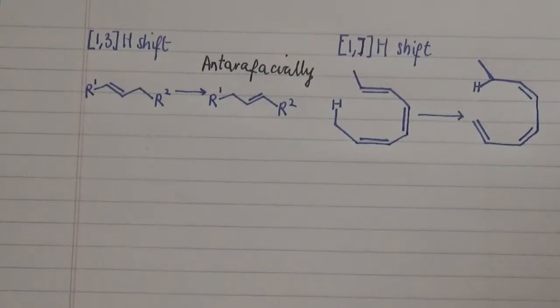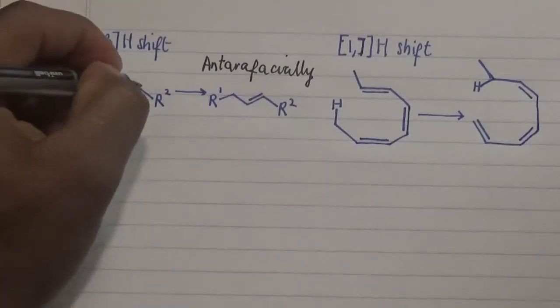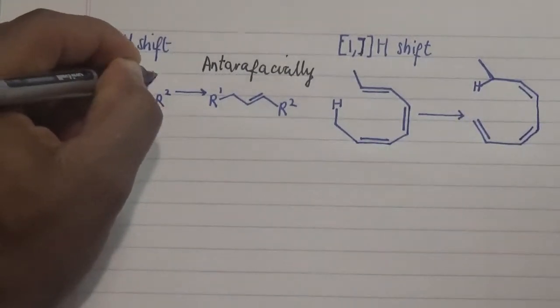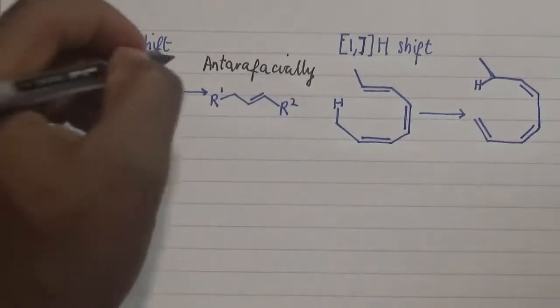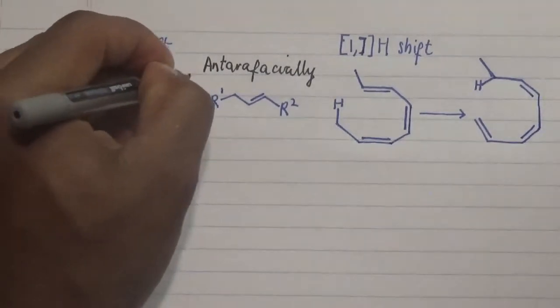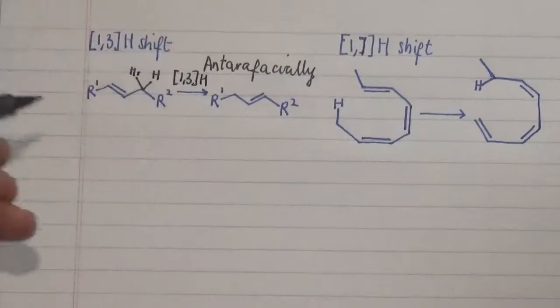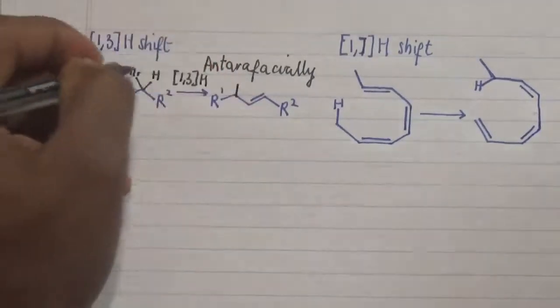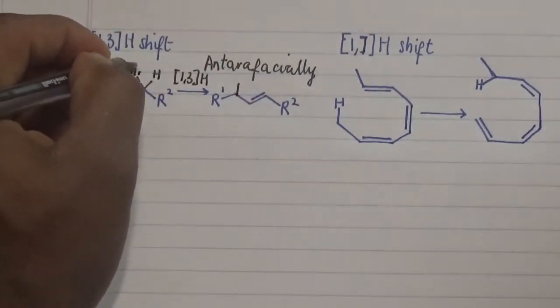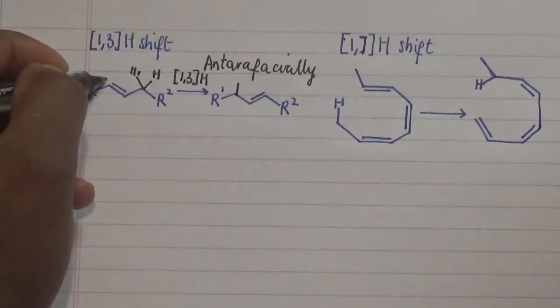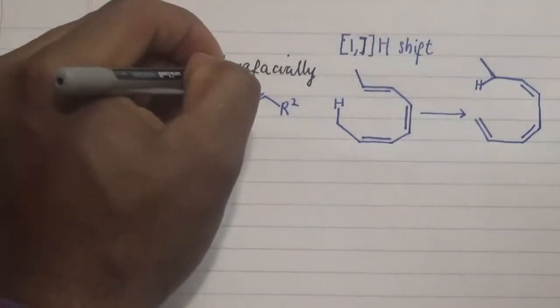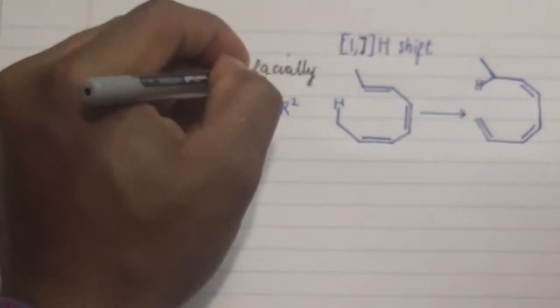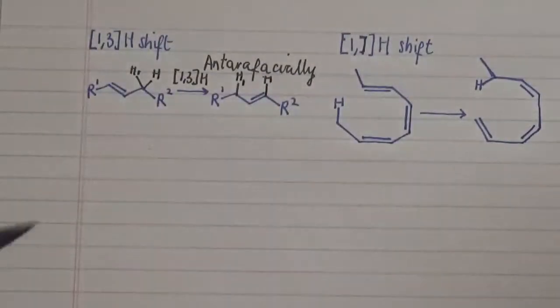First off let's look at our 1,3 hydrogen shift. So in the 1,3 hydrogen shift we have two protons in this particular carbon. Once it goes in a 1,3 shift, this particular hydrogen here actually moves over here to this other carbon.